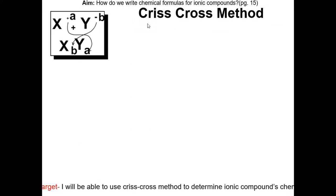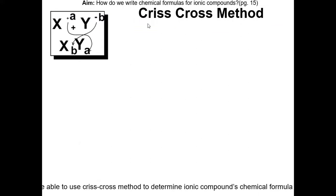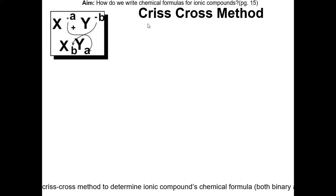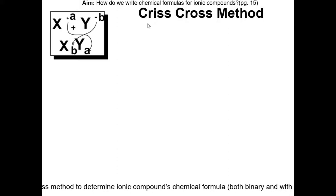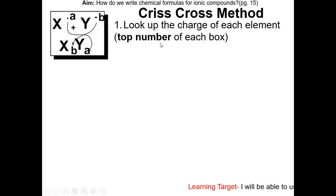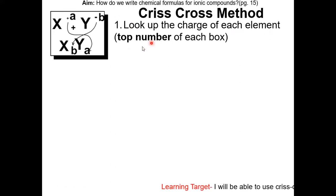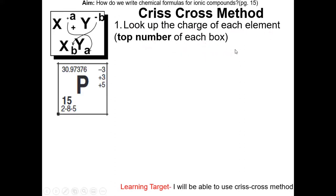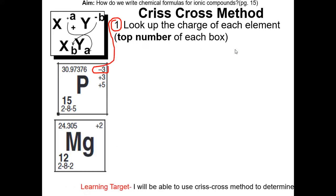The crisscross method is a quick and simple easy way to get the chemical formula for ionic compounds. I'll go over the procedure and show you a few examples. Step 1: look up the charge of each element — it is the top number of each box in the periodic table. So phosphorous is minus 3, and magnesium is positive 2.